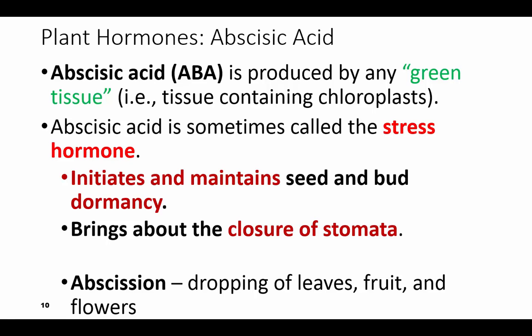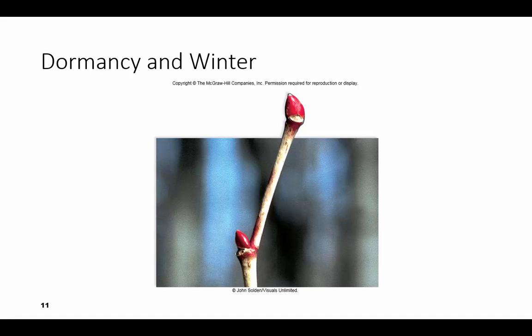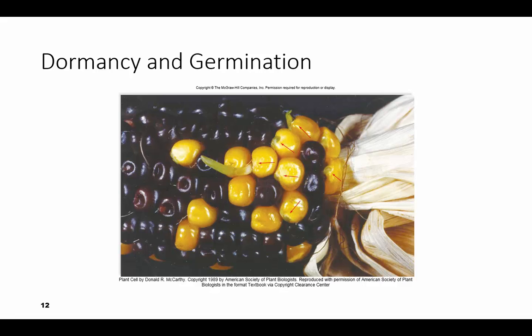Abscisic acid is made by the green tissue — the tissue that contains chloroplasts — and we abbreviate this ABA. It's the stress hormone, so it initiates and maintains seed and bud dormancy, and it closes the stomata. With abscission you're going to see the leaves drop off, the fruits drop, and the flowers drop. This winter bud shown here is formed because of the abscisic acid. This is Indian corn, and that has reduced sensitivity to abscisic acid.